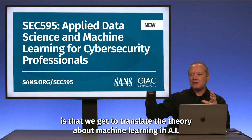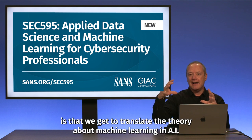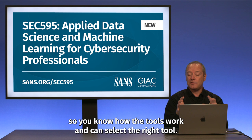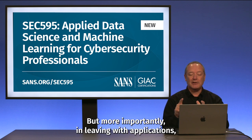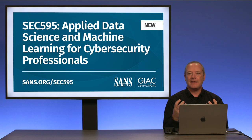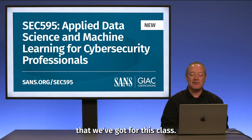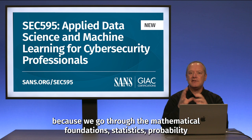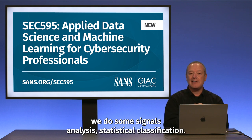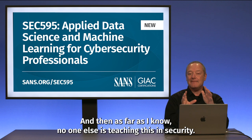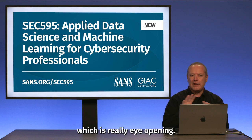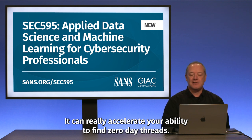The biggest message is that we translate the theory about machine learning and AI directly to applications. You learn the underlying theory so you know how the tools work and can select the right tool, but more importantly, you're leaving with applications. I encourage you to look at the demonstration for this class — it'll give you a taste of what we do. We go through the mathematical foundations, statistics, probability, signals analysis, and statistical classification. And then, as far as I know, no one else is teaching this in security: how to apply neural networks and deep learning to cybersecurity, which is really eye-opening and can really accelerate your ability to find zero-day threats.